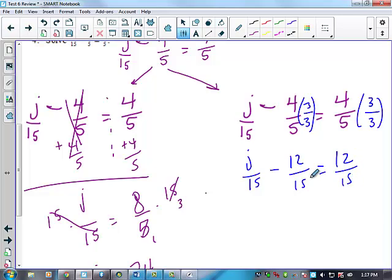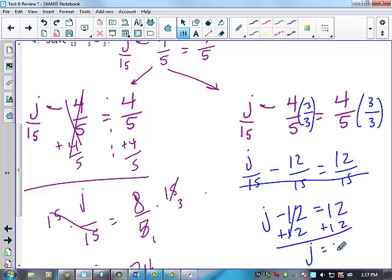12-fifteenths equals 12-fifteenths. Now, what we do whenever we clear the fraction is if we have a common denominator, which here we do, and there is not a variable in the denominator, you can eliminate the denominator altogether, which gives you J minus 12 equals 12. So at this point, I could just add 12 to both sides. So J is equal to 24. Both of those are the same thing.